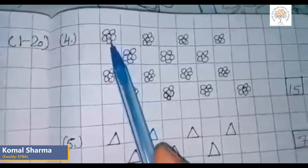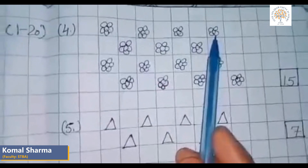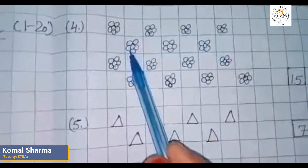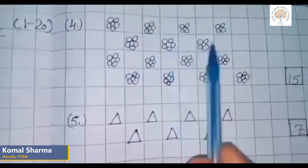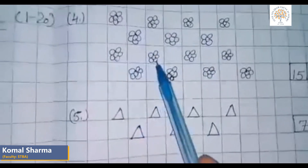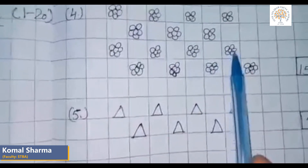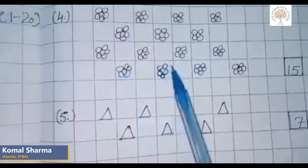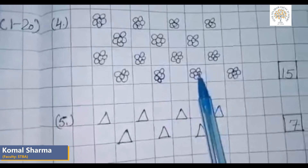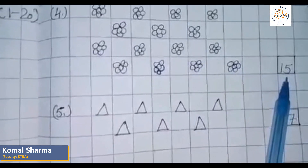Now we will count pictures of flowers: one, two, three, four, five, six, seven, eight, nine, ten, eleven, twelve, thirteen, fourteen, fifteen. There are fifteen pictures of flowers.